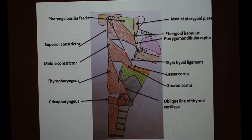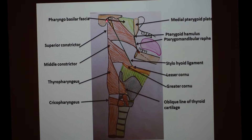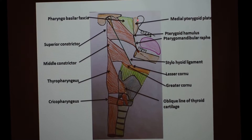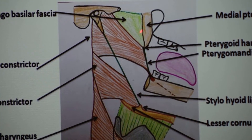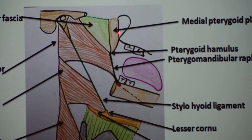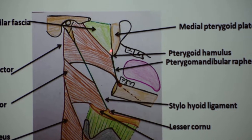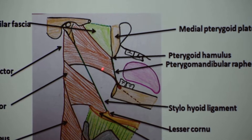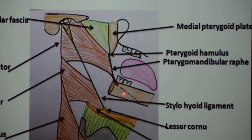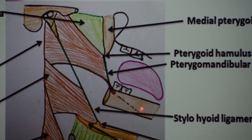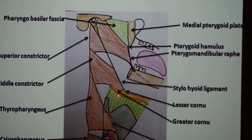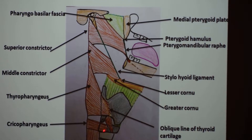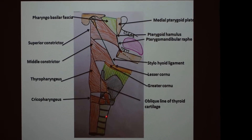Before going to the origin and insertion of these three constrictor muscles, let us take some orientation about the bony landmarks from above downward. The medial pterygoid plate is a projection from the base of the skull from the body of the sphenoid; there are two pterygoid plates, medial and lateral. Also visible are the upper jaw, lower jaw with teeth, body of mandible, zygomatic arch, styloid process, hyoid bone, thyroid cartilage, cricoid cartilage, and the cartilaginous rings of the trachea below.